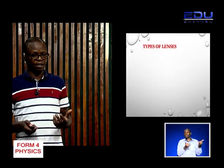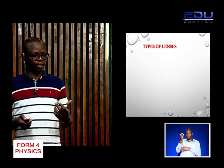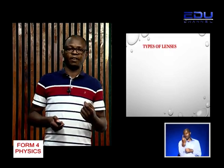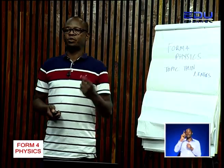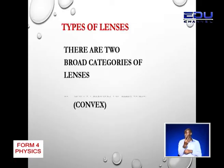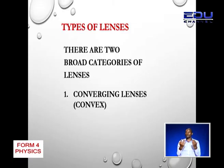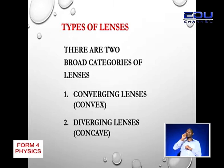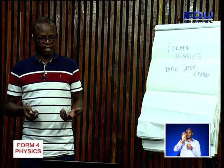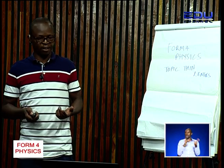But for today, we are only going to introduce some of the main concepts in the topic, one of them being the types of lenses. Now, we have two broad categories of lenses. Some are converging lenses and the others are diverging lenses. The converging lenses are usually known as convex lenses, and diverging lenses are usually known as concave lenses.